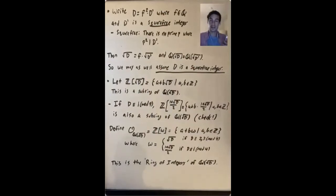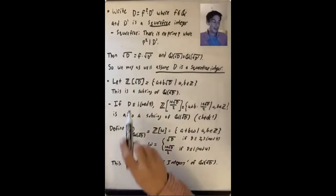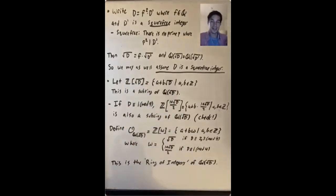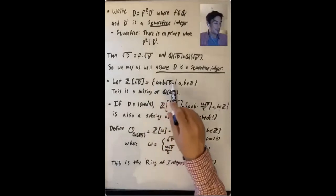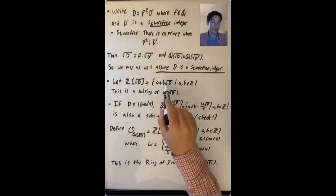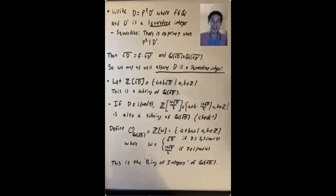Assuming D is square-free, let's define Z bracket √D to be the set of all things A + B√D where A and B are integers instead of rational numbers. This is a subring of Q adjoin √D — you multiply two of these together and you get another one, which is easy to check.